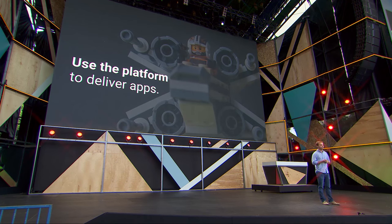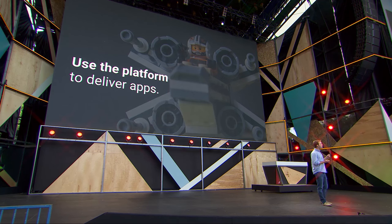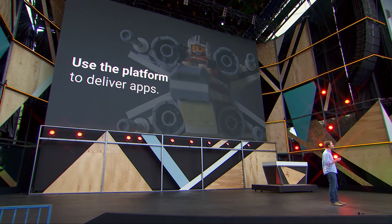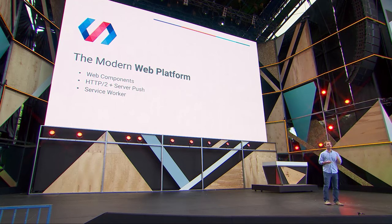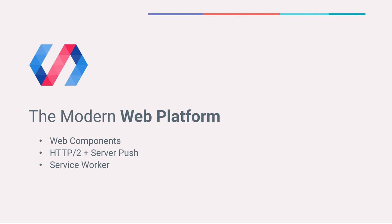We think there is a better way, which is to use the platform to deliver apps. The tighter to the platform you can build your application, the faster it's going to be, especially on slow networks and slow devices. Let the browser be your application. And thanks to brand new web platform primitives, we can embrace new technologies the browser provides. There are really three important primitives for delivering a modern mobile web application: web components, which allow you to construct your application out of granular dependencies; HTTP2 and server push, which allows you to serve these granular dependencies efficiently without incurring massive round trips; and Service Worker, which lets you reliably cache these granular components on your user's device.